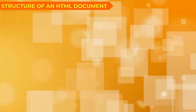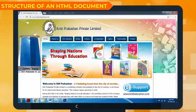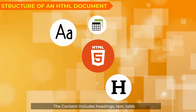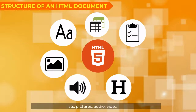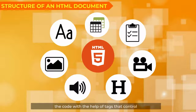The basic structure of an HTML document is made up of content and markup. The content includes headings, text, tables, lists, pictures, audio, video, etc. The markup is the information inserted in the code with the help of tags that control the appearance of the content.